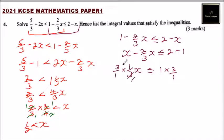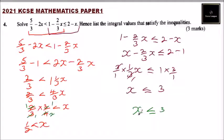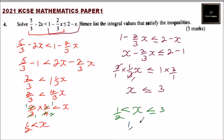Combining both results: x is greater than one half and x is less than or equals to three. The integral values between one half and three, where three is inclusive, are one, two, and three. Those are your integral values, and that's how you work it out to get three marks.